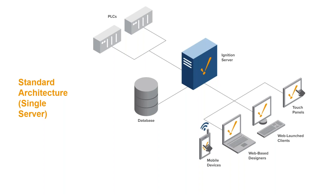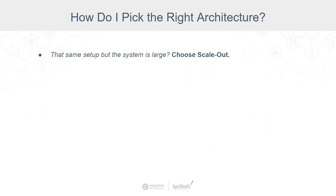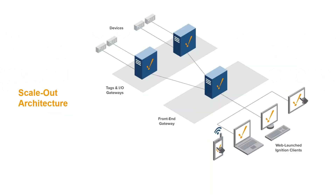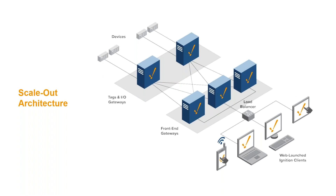What if you have a system that's bigger than a small system? That's where the scale-out architecture comes into play. The scale-out architecture has to do with tags and IO gateways connecting to devices, having those individual pathways that split the load for device communication — sometimes connected directly to devices, sometimes through MQTT, sometimes through other protocols or OPC. These tags and IO gateways split out the load for tag processing, the historian, and alarm processing, separating that from the front-end gateways. And if you have more than a few hundred clients, you can have multiple front-end gateways running behind a load balancer to split the load across all of the different clients.